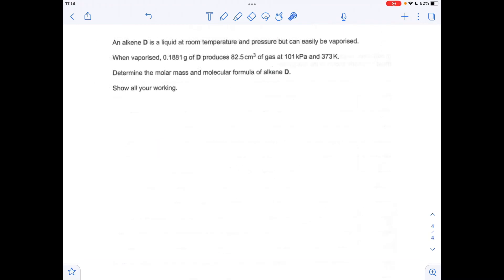So moving on to the final question, it's going to be an ideal gas calculation, because we've got the volume, we've got the pressure, and we've got the temperature. So what we need to do is calculate the moles of D, and then work out its molar mass from mass over moles. So the first thing we need to do is rearrange the ideal gas equation for moles, PV over RT. Now we'll put the numbers in.